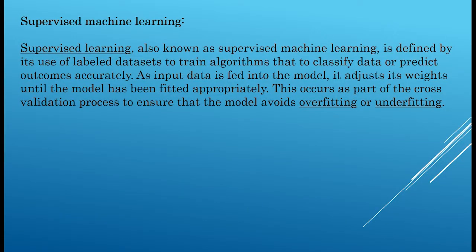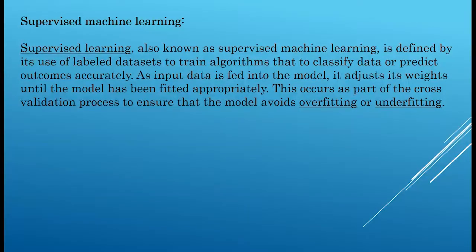In supervised machine learning, you always have labels. Labels can be classification type or regression type. Classification labels can be like 0 or 1 — for example, 0 means a customer would not churn and 1 means the customer would churn. Regression labels are continuous, like predicting the price of a second-hand car, where price is a continuous feature.